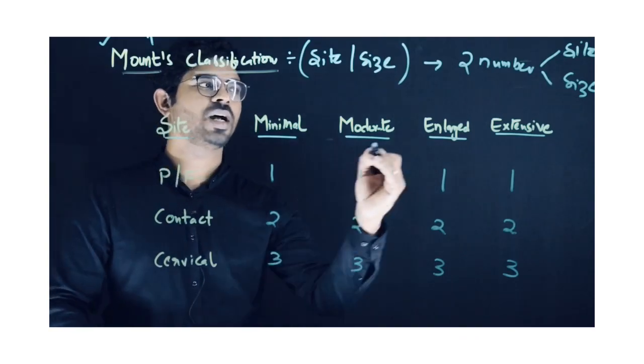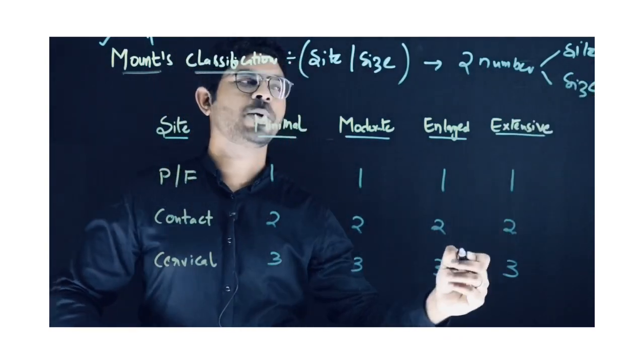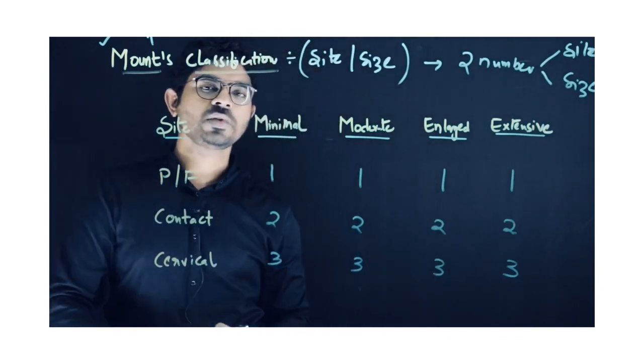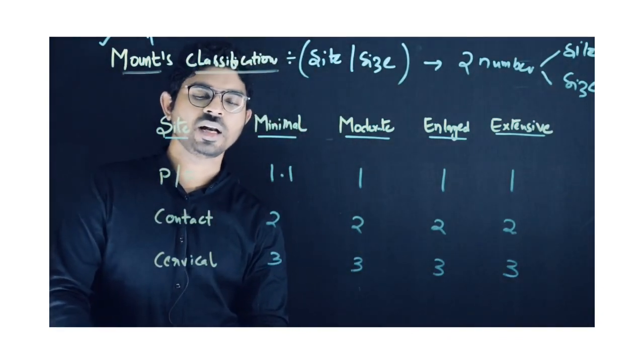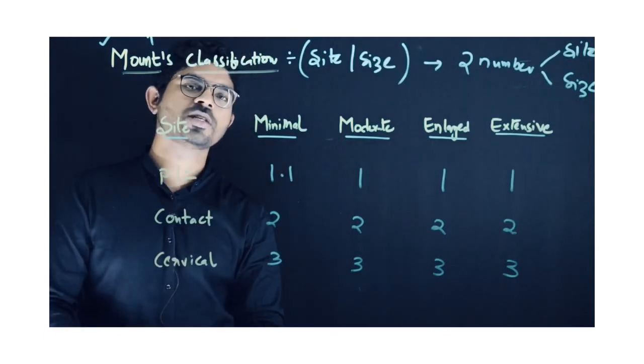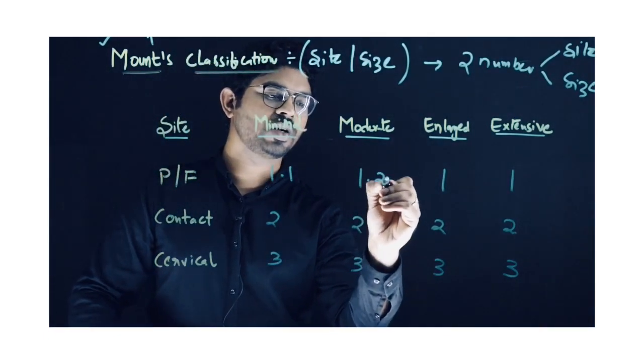We are done with the first number, which is site. Now we'll talk about size. Minimal is 1 - if it's 1.1, it's occlusal caries which is minimal. Moderate is 2.